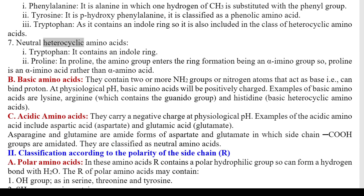7. Neutral heterocyclic amino acids: i) Tryptophan — contains an indole ring; ii) Proline — in proline, the amino group enters the ring formation being an alpha amino group, so proline is an imino acid rather than an alpha amino acid. B) Basic amino acids: they contain two or more NH2 groups or nitrogen atoms that act as bases, i.e., can bind protons. At physiological pH, basic amino acids will be positively charged. Examples: lysine, arginine (which contains the guanido group), and histidine (basic heterocyclic amino acid). C) Acidic amino acids: they carry a negative charge at physiological pH. Examples include aspartic acid (aspartate) and glutamic acid (glutamate).